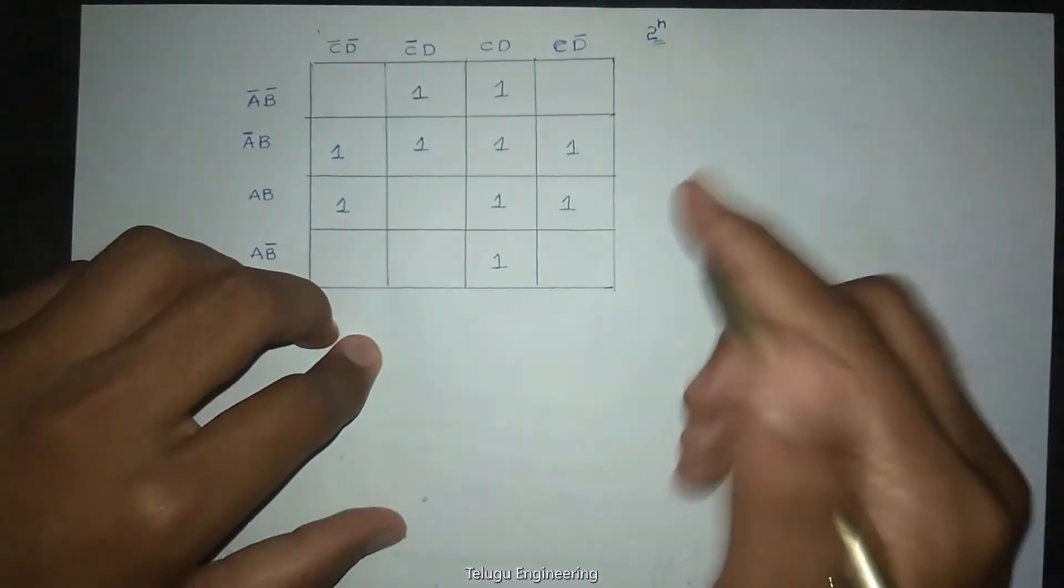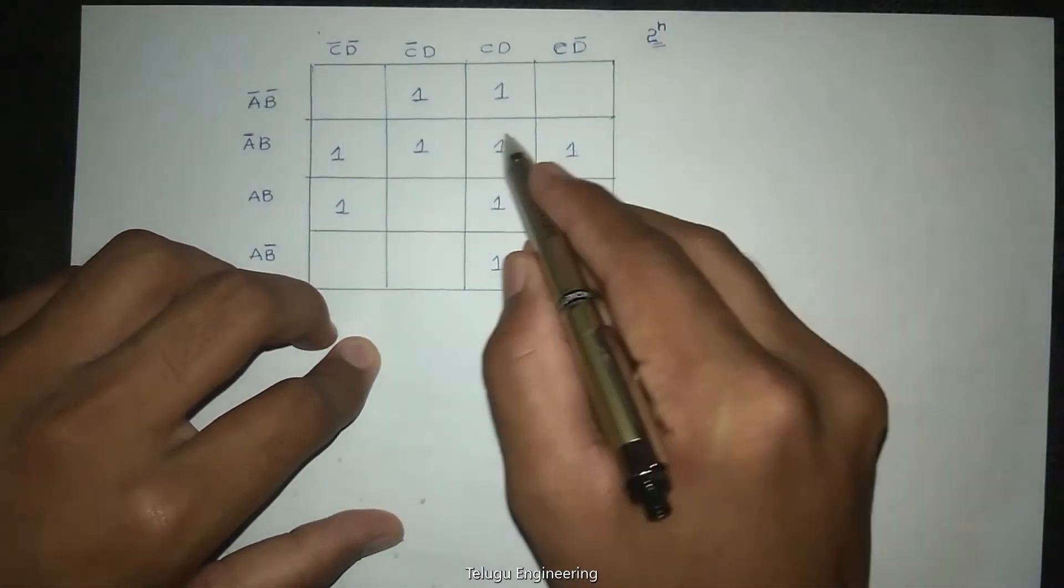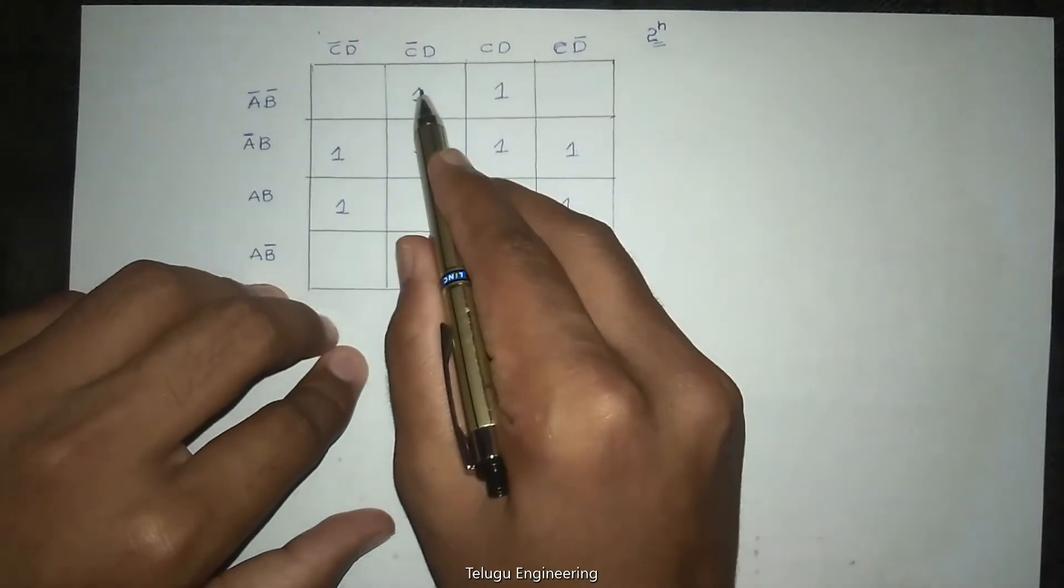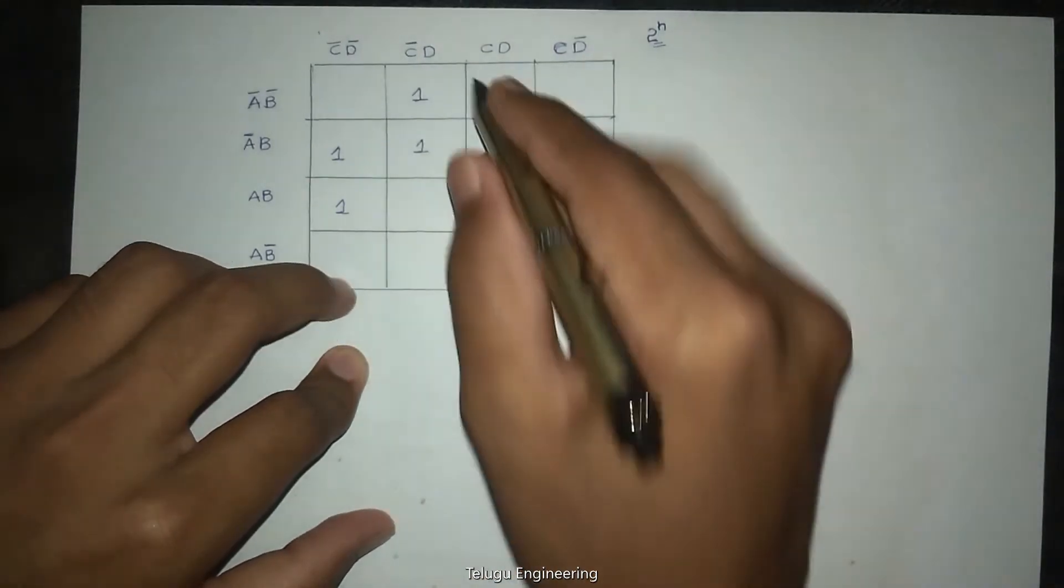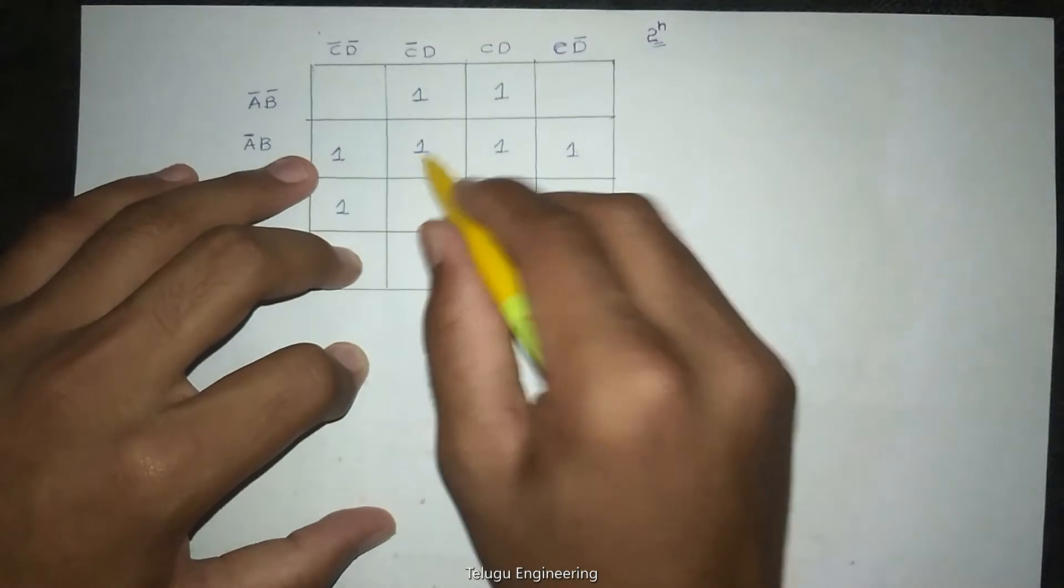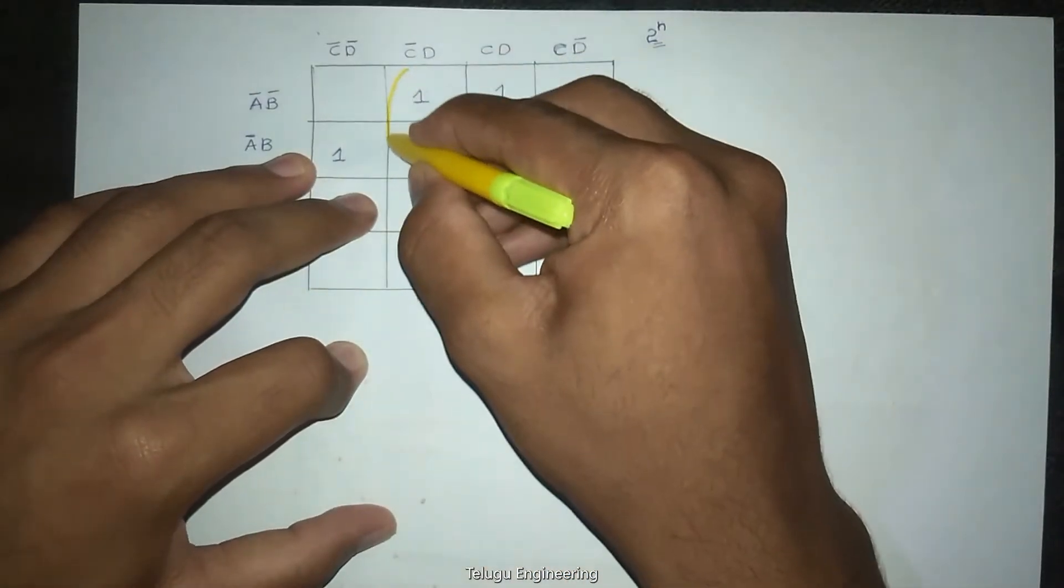So this is grouping. I will show you. In this K-map, the first grouping - the maximum is one, two, three, four. So first is grouping of four.